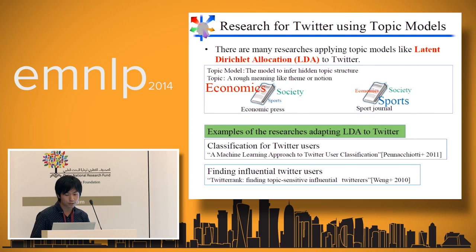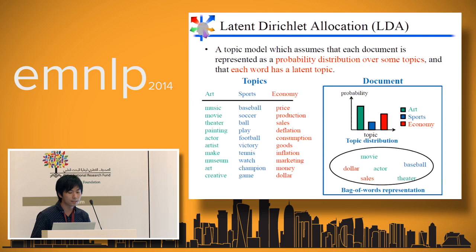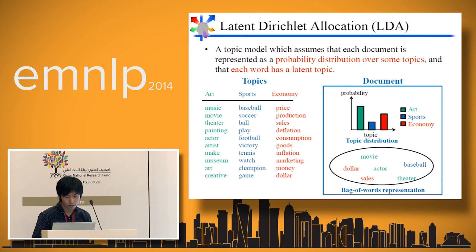These are examples of researches adapting LDA to Twitter: a classification for Twitter users, and finding influential Twitter users. LDA is a topic model which assumes that each document is represented as a probability distribution over some topics, and that each word has a written topic. This represents a bag-of-words representation of a document.